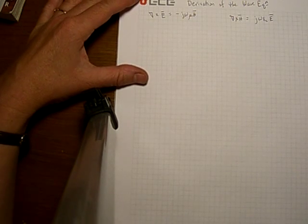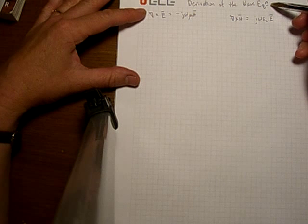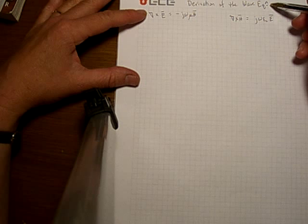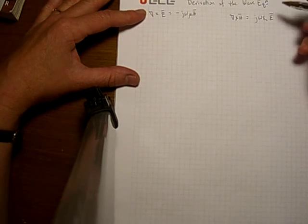The next thing that we'd like to do is derive the wave equation. Your book derives the wave equation in the time domain, but I'd like to derive the wave equation in the frequency domain. The frequency domain is the phasor domain.